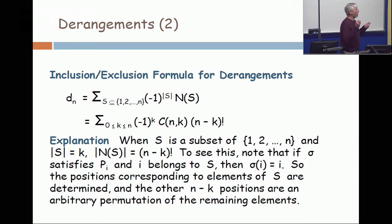And that's exactly what I want. You want the objects which satisfy none of the properties. So your property is that you satisfy property i when i is in position i. Okay, now, why do I write that dn is just the summation 0 to k less equal to n minus 1 to the k, the binomial coefficient C, n choose k, times n minus k factorial? Why is that?